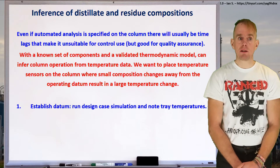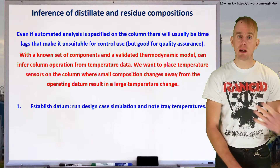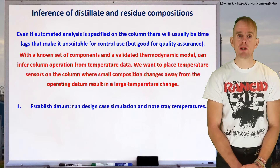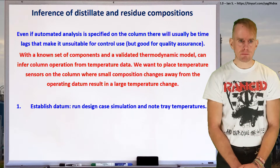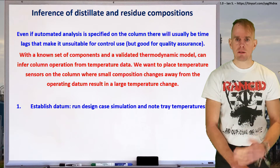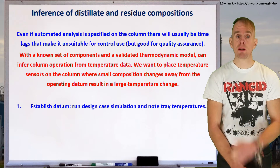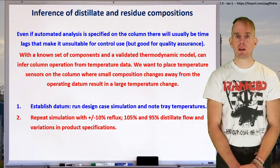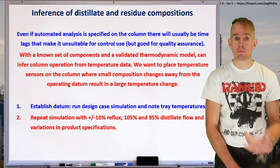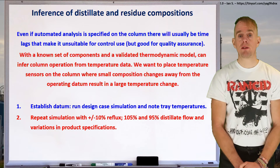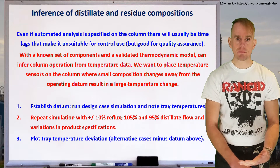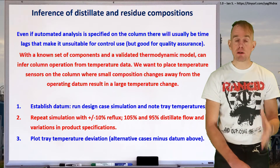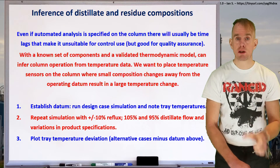Let's establish a workflow. The first thing we're going to do is to figure out what our datum case is. From the last part of this lecture, we've already got a datum for our particular example — we know the number of feeds, stages, feed stage location, feed preheat, and column pressure. For our datum case, we're going to run our simulation again and record the temperature profile of the column, looking at each of the tray temperatures. Then we're going to change things: increase and decrease reflux, change the distillate flow rate, and change our product specifications. For each scenario, we note the temperature profile. With these data, we plot temperature deviation, which means the temperature profile of one of these alternate cases minus the temperature profile of my datum.